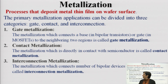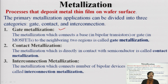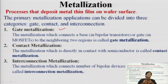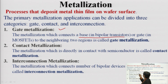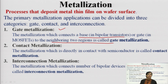The first category is gate metallization. In MOS devices, a gate material comprising metals is required, and the gate contact must be established. Gate metallization connects the base of a bipolar transistor or the gate in the case of MOSFETs to the neighboring regions.